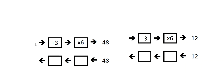To figure out what number went in. The inverse of multiplying by six is dividing by six, so we put dividing by six there. Then the inverse of adding three is subtracting three. So let's do it now: 48 divided by six is eight, eight minus three is five. So the answer is five.